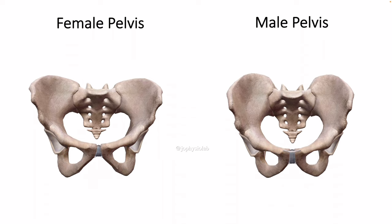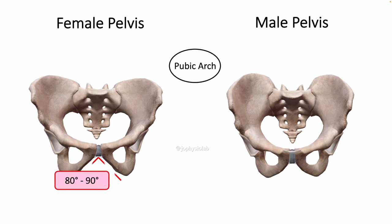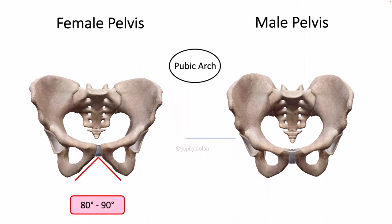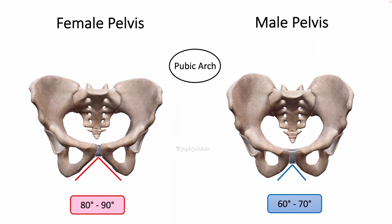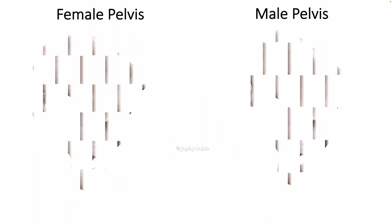The pubic arch is typically going to be much wider in women than in men. You can remember this by thinking that when a woman gives birth, she will have to spread her legs wide to do so.